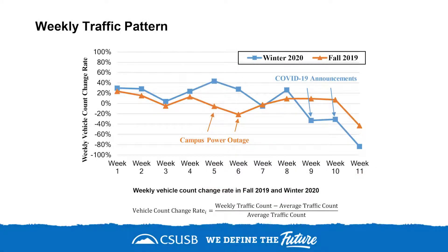We also looked into weekly traffic patterns, which may provide insight on long-term traffic trends. While the last spring and winter quarters were unconventional, we can see how wildfire-induced power outages and the COVID-19 pandemic affected the university. Generally, we can use traffic patterns to study students' movement behavior, which in turn can help improve class scheduling, campus traffic management, and planning for emergency response.